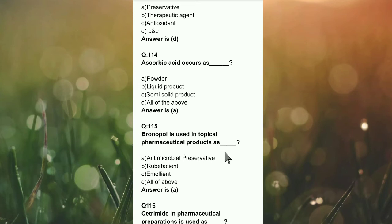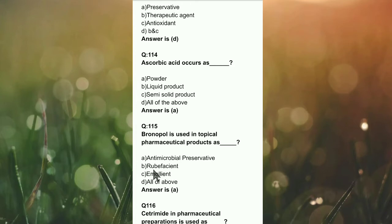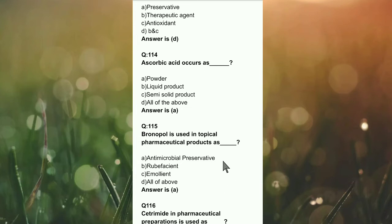Question number 115: Brown opal is used in topical pharmaceutical products as what? Option A: antimicrobial preservative. Option B: emollient. Option C: all of the above. The right answer is A — antimicrobial preservative.